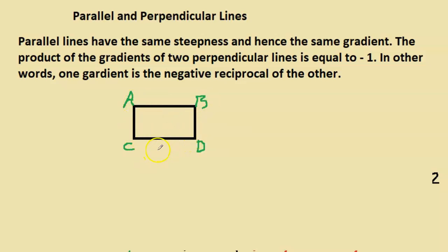Hence, naturally, based on the definition of gradient, they will have the same gradient. Because they have the same steepness, same angle in relation to the horizontal. So if you have two lines, in this case, the gradient of AB would be equal to the gradient of CD.